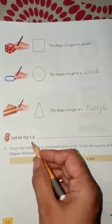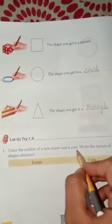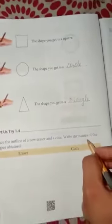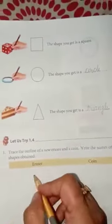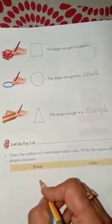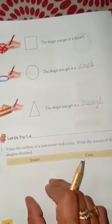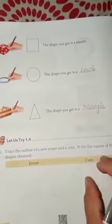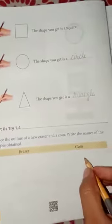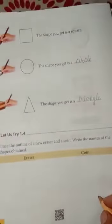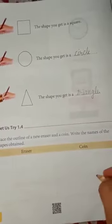Let us try 1.4. Place the outline of a new eraser and a coin. Write the names of the shapes obtained. This is an activity. You will put a new eraser, then you will make its outline. You will identify yourself which shape you will get. Same. You will put a coin, you will make an outline, then you will write down which shape you get.